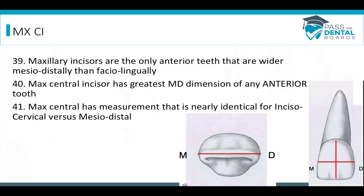The maxillary central incisor is the only anterior tooth that's wider mesiodistally compared to facial-lingually. It has the greatest mesiodistal dimension of any anterior tooth. The maxillary central also has a measurement nearly identical for the incisal-cervical dimension compared to the mesiodistal dimension. Be very careful about which dimension they're asking, because a similar 'nearly identical' question applies to a different tooth when asking about a different dimension.